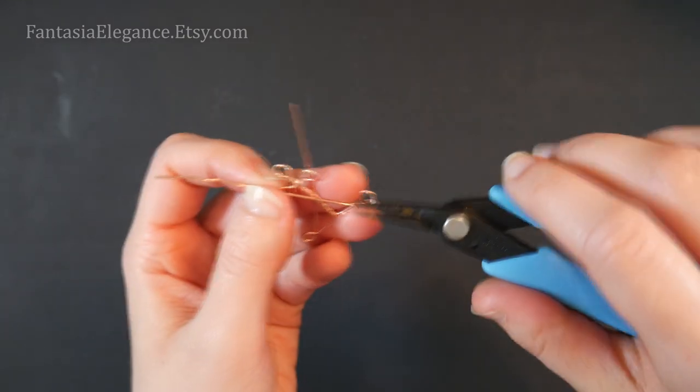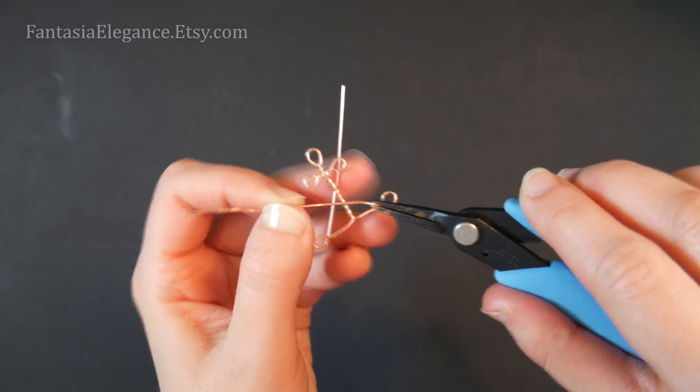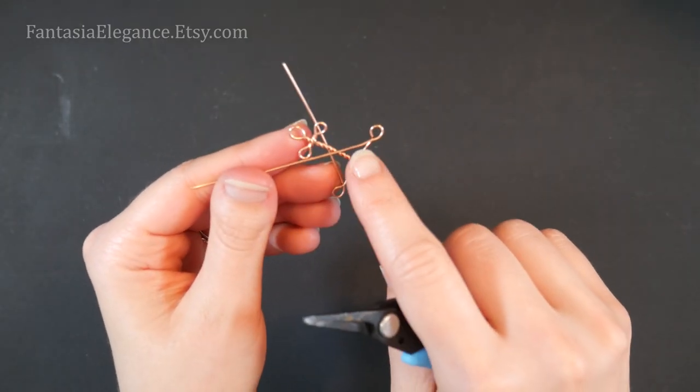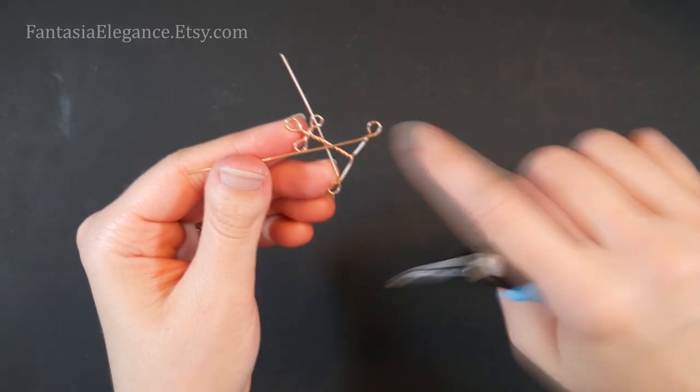I also have a little ripple in my wire that I don't like, so I'm going to straighten that out as well. Now we're going to twist this wire length here with that wire length there.